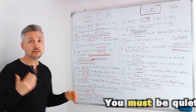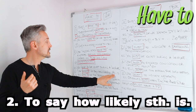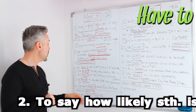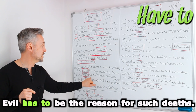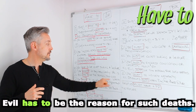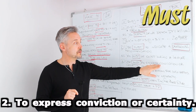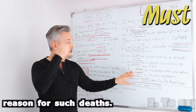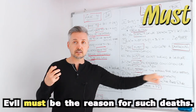Another usage of have to is to say how likely something is. In my introductory example: evil has to be the reason for such deaths — meaning it's probable. Instead, if you use must, it expresses conviction or certainty about something. So, evil must be the reason for such deaths means I'm convinced that evil was the reason.